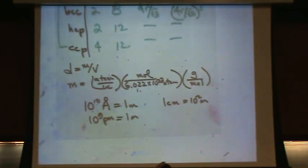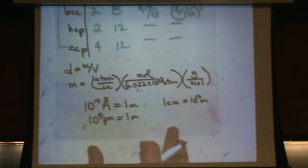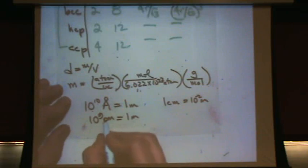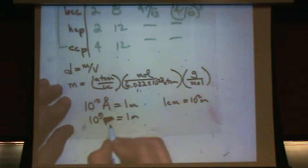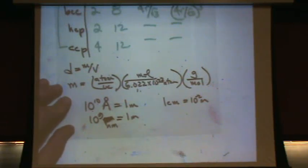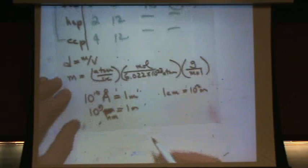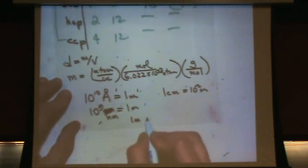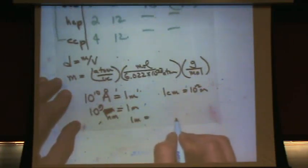Some conversions will be helpful. One meter is 100 centimeters. I wrote picometer here — I should have written nanometer. One meter is how many picometers? Make sure you know those conversions.